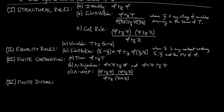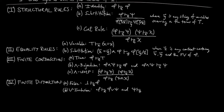Fourth, finite disjunction. A: false — that false entails phi in the context of x. You can think of this as the dual to conjunction, where false is the initial object. B: inclusions — we have the axioms 'phi entails phi or psi in the context of x' and 'psi entails phi or psi in the context of x.' C: the disjunction universal mapping property — if phi entails chi in the context of x and psi entails chi in the context of x, then phi or psi entails chi in the context of x.